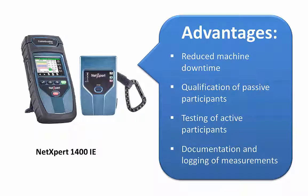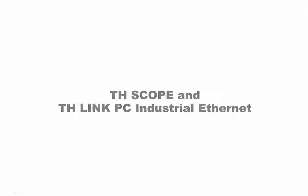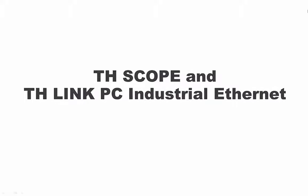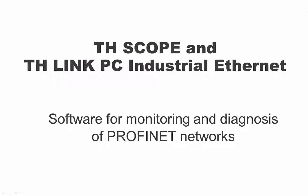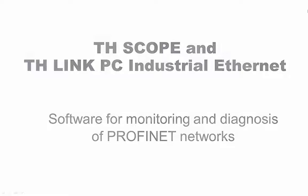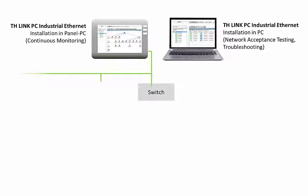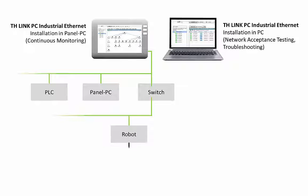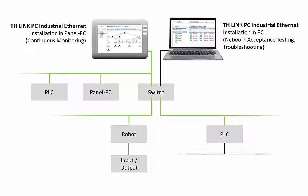For an efficient inspection and documentation of PROFINET installations, the software solution TH-Link PC and TH-SCOPE is employed. The TH-Link PC is an intelligent network agent and applies various protocols through which data is collected from the network and its participants. The software application TH-SCOPE makes this data available to users and documents it, and the monitoring of the network status can also be integrated into higher-level visualizations.